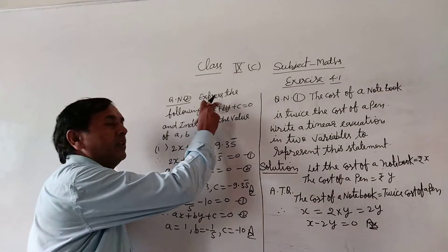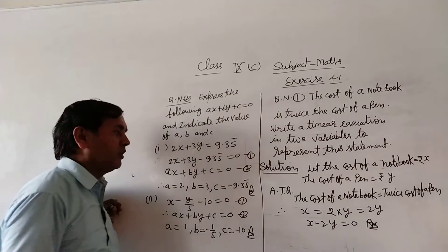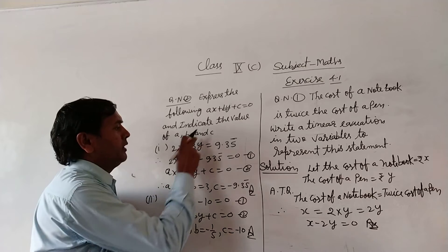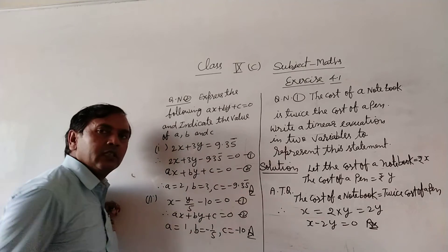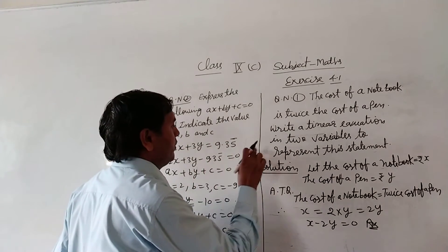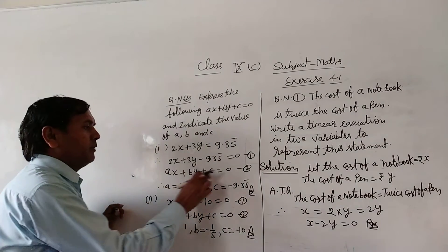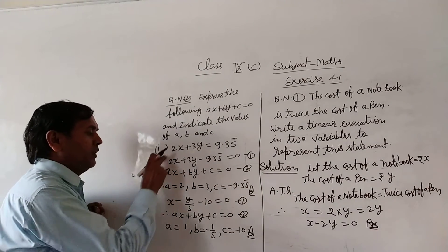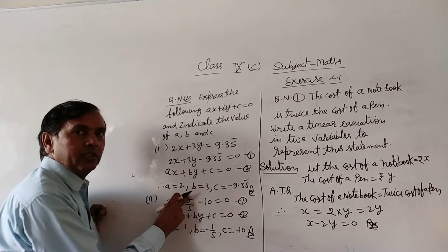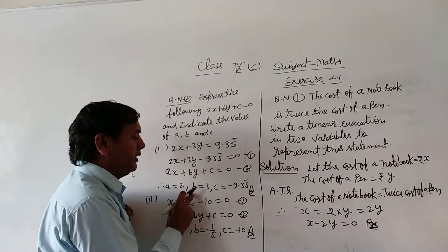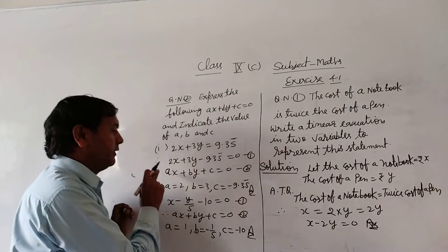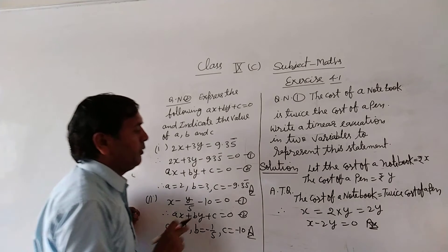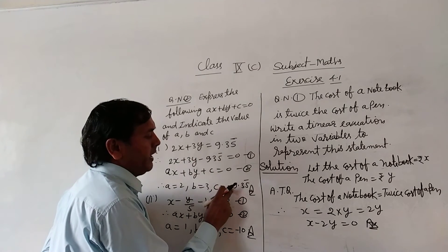It may be rewritten as, according to ax plus by plus c is equal to 0, so 2x plus 3y minus 9.35 is equal to 0. Comparing ax plus by, a is equal to 2, b is equal to 3. The coefficient of y is b, coefficient of x is a, the value of the constant is c.